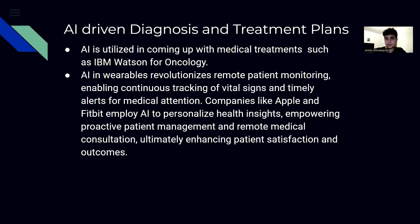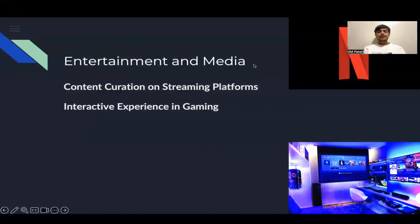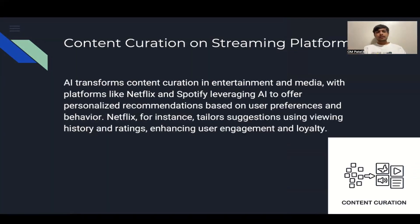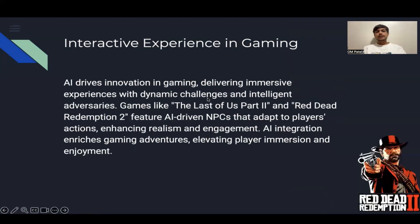For the second half of the presentation, I'll pass it over to Om. Talking about entertainment and media, there are two main points: content curation on streaming platforms and interactive experience in gaming. Nowadays, every big company like Netflix, Spotify, or Amazon Prime uses artificial intelligence to curate content for individual needs. In gaming, many open-world games like The Last of Us Part 2 or Red Dead Redemption 2 have AI-driven NPCs which adapt to player actions, enhancing realism and engagement for users.